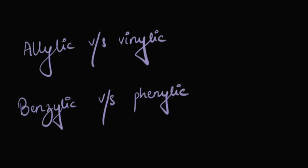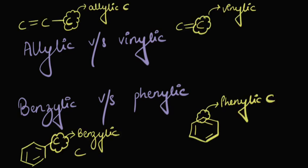Just to recall what allylic, vinylic, benzylic, and phenylic actually mean: a carbon attached to a doubly bonded carbon is called an allylic carbon, while the carbon which actually has the double bond is called a vinylic carbon. A carbon adjacent to the benzene ring is called a benzylic carbon, while the carbon atom that belongs to the benzene ring is called a phenylic carbon.